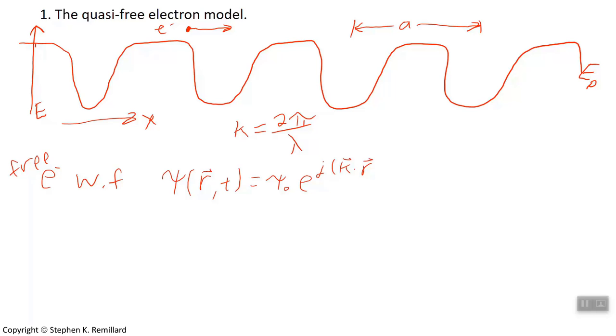Because we're doing a lot of electronics, we use j for the square root of minus one instead of i. R is the position vector in three dimensions. K is the wave number, which is also a vector, because you can have a different wave number if the electron is going in different directions, minus the energy over ℏ times t. ℏ is Planck's constant over 2π. T is time.